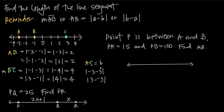What about looking at a different kind of example? Sometimes we're given a word problem where we're told point P is between A and B, PA is equal to 15, and PB is equal to 100 — find AB. So with something like that, we're going to have to illustrate this problem on a number line, and then find the missing value.